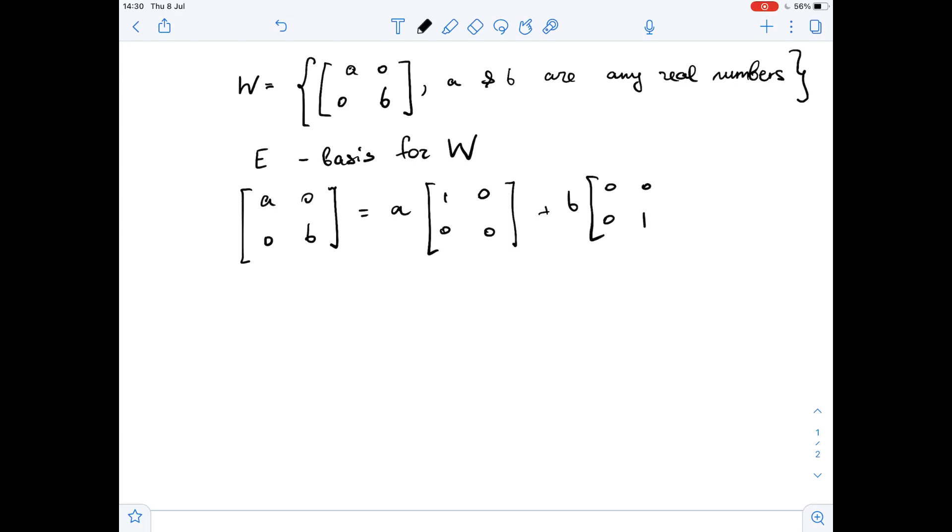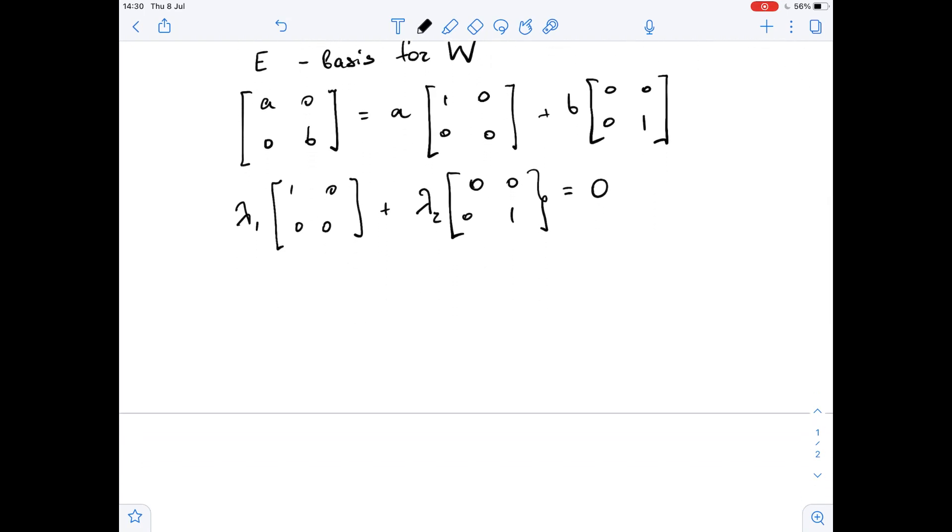Now let lambda_1 and lambda_2 be any two scalars such that lambda_1 times [1 0; 0 0] plus lambda_2 times [0 0; 0 1] equals zero.